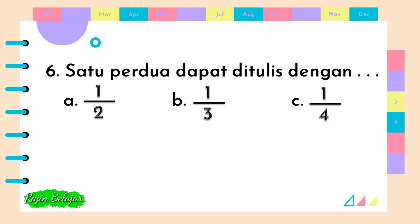Satu per dua dapat ditulis dengan titik-titik-titik. Pilihannya A, B, C. Jawaban yang benar adalah A. B merupakan pecahan satu per tiga, C merupakan pecahan satu per empat.